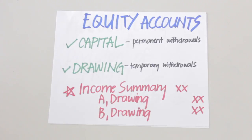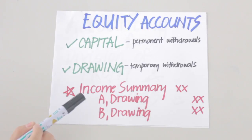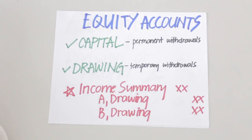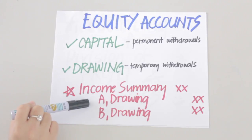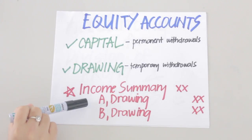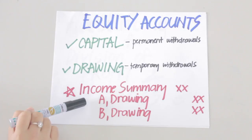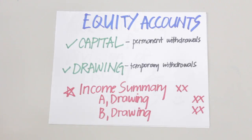For a sole proprietorship, drawing accounts are closed to the capital accounts afterwards. However, drawing accounts are normally not closed to capital accounts for partnerships — unless the articles of co-partnership specifically indicate that the balance in the drawing account will be made permanent, in which case the respective shares should be closed to the capital accounts.